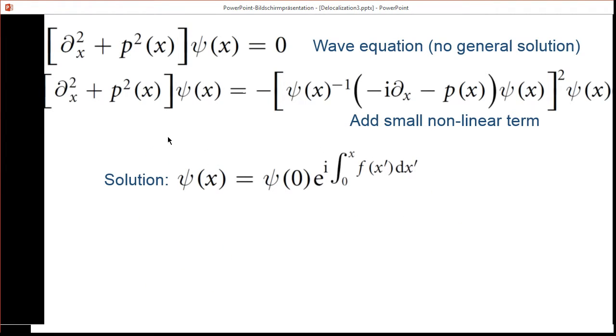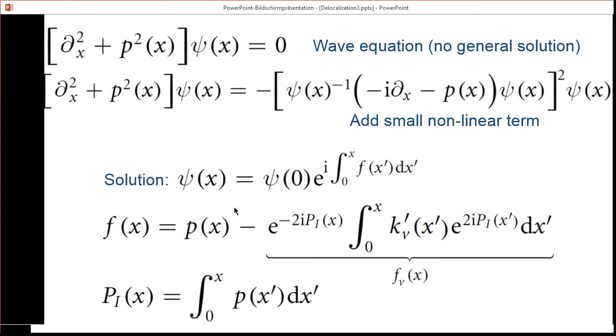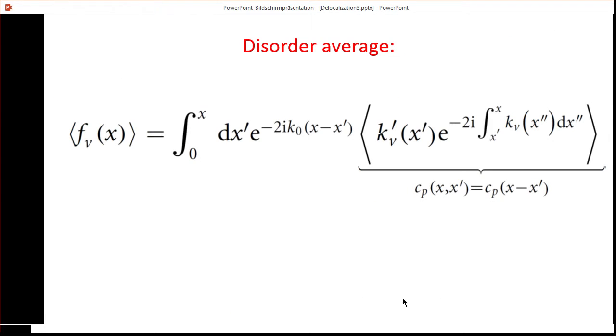With this equation, we can actually find an explicit solution of the amplitude of psi(x), which is given here. It depends on the function f(x), which is basically just the difference between the classical momentum and some other function f_v(x), which depends on the disorder potential. The task now is to take the disorder average of that function. This disorder average can be expressed in terms of a new correlation function c_p(x), which depends on the derivative of the disorder potential kV'. That's the reason we use p as label for that correlation function.